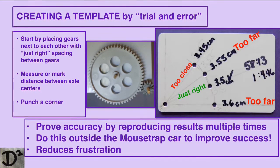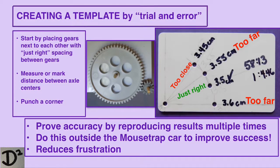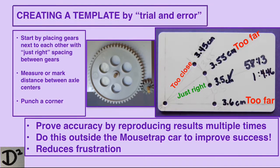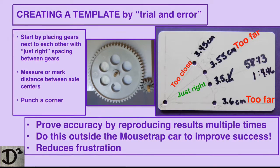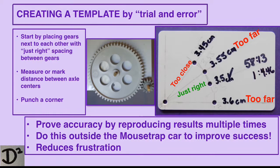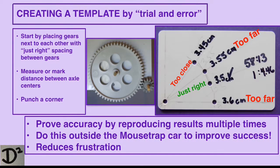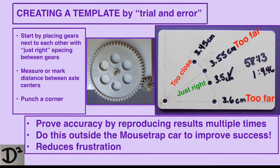Creating an accurate template outside of the mousetrap car produces successful results when you build. You must make sure that your template produces repeatable results. This will be good for the lifetime supply of these gears. If you get new gears, you'll need to create a new template.